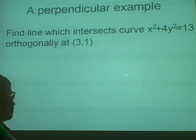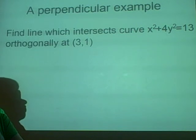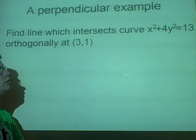So find a line which intersects the curve x²+4y²=13 orthogonally, that means perpendicularly, at (3,1). So first of all, we should check that it actually works. So we have 3²+4·1=9+4=13. That's fine.